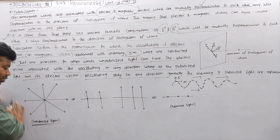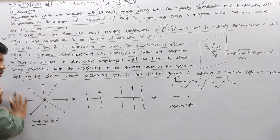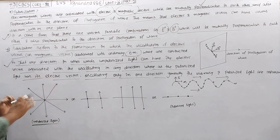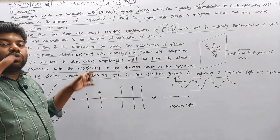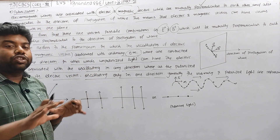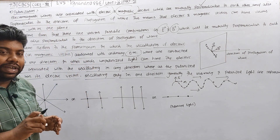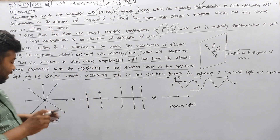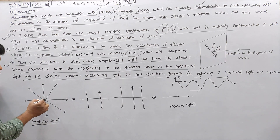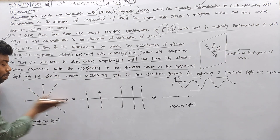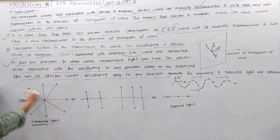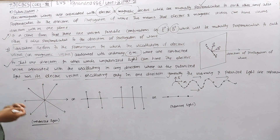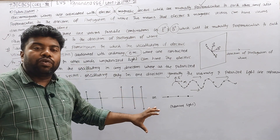If you look at light, it is unpolarized — it is spread in all directions. If you look at the source of unpolarized light, it flows and is widespread in any direction.